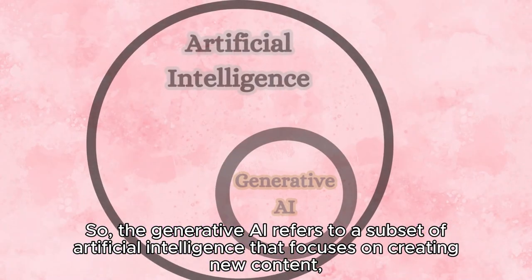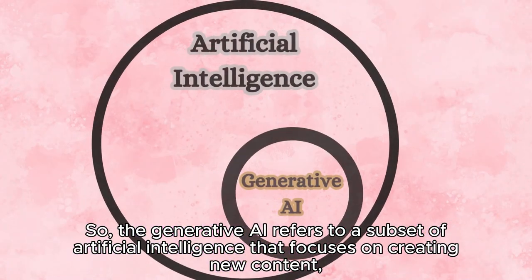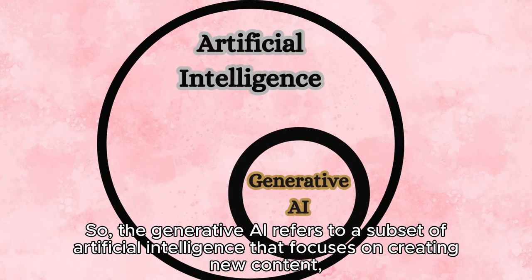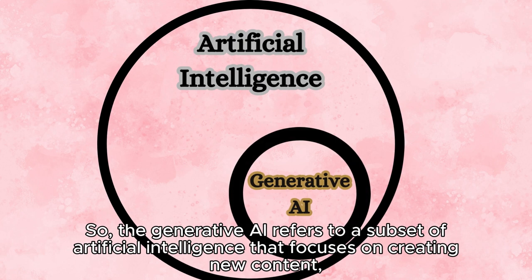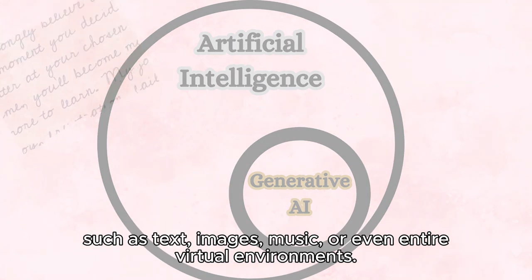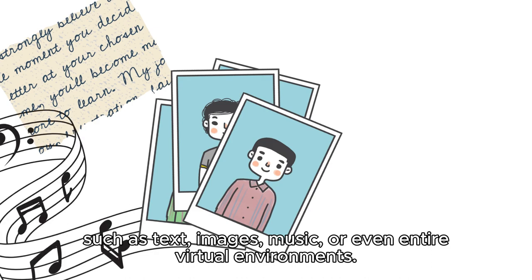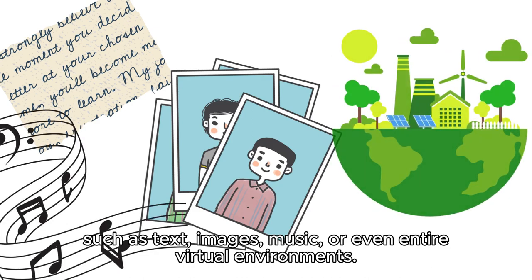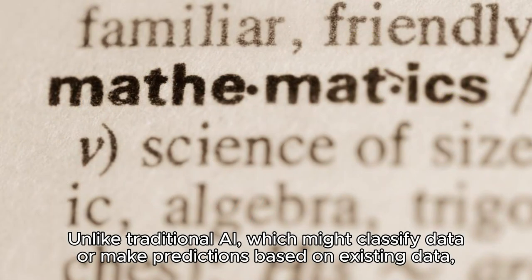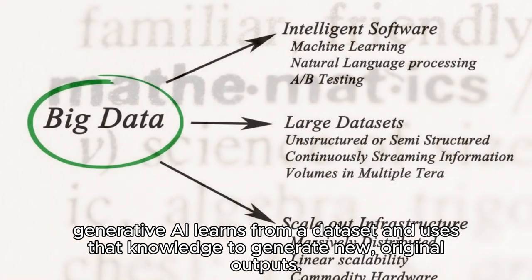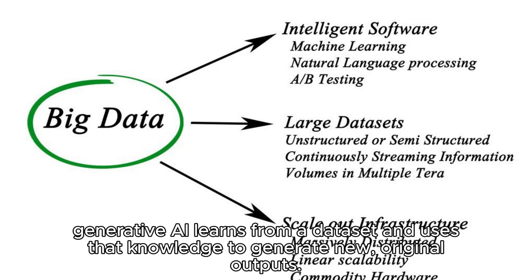So, generative AI refers to a subset of artificial intelligence that focuses on creating new content, such as text, images, music, or even entire virtual environments. Unlike traditional AI, which might classify data or make predictions based on existing data, generative AI learns from a dataset and uses that knowledge to generate new original outputs.